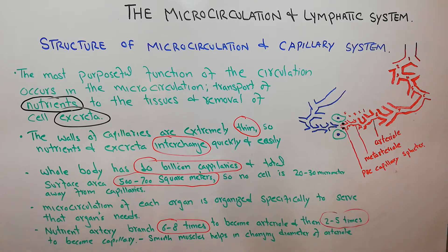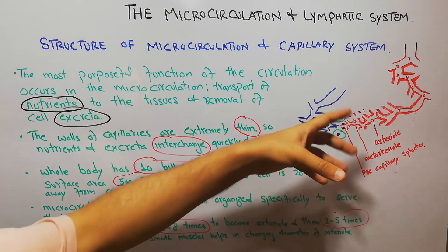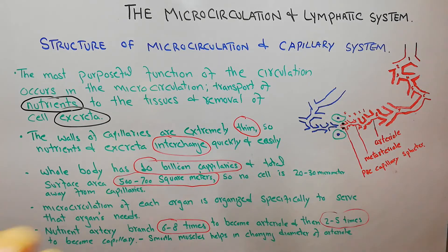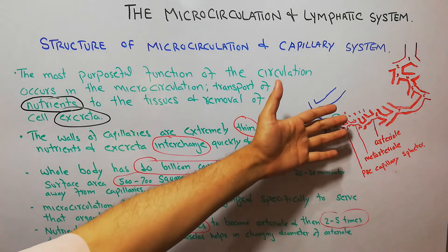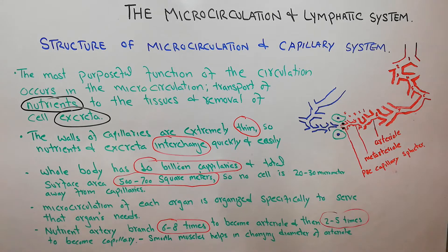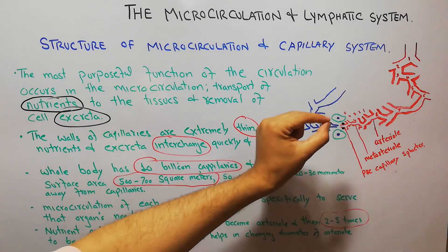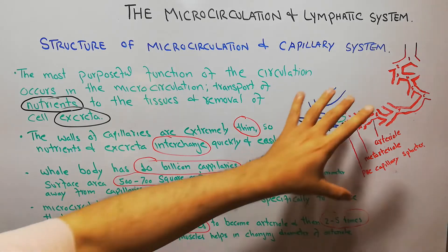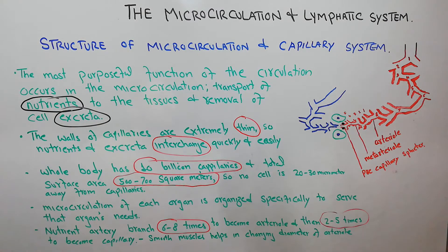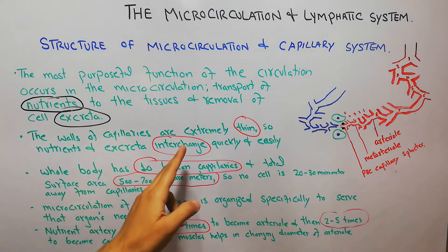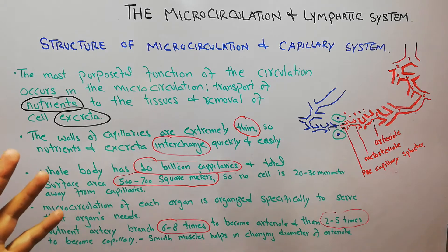The nutrients required by the cells reach them, and the excreta from the tissues goes into the capillaries because the walls of the capillaries are very thin. The walls of arterioles, arteries, larger arteries, and the aorta are very thick, elastic, and muscular, so the exchange or interchange of nutrients and excreta is very difficult there.